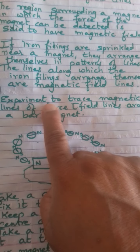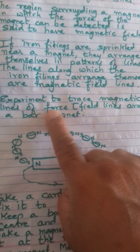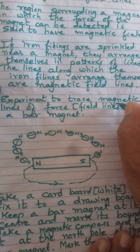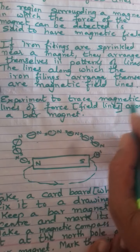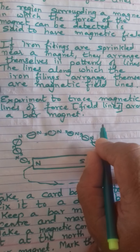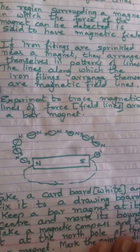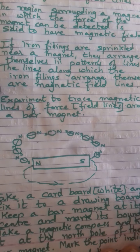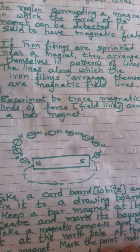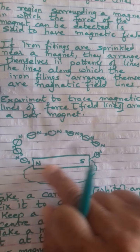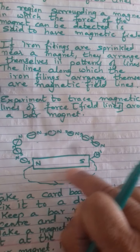Now we will see an experiment to trace the magnetic field lines around a bar magnet. Take a drawing board, fix a drawing sheet or drawing paper to it with pins, and place a bar magnet at the center of the drawing sheet. Mark its boundaries with the help of a pencil.